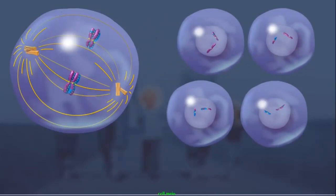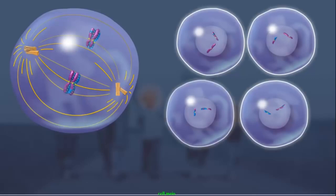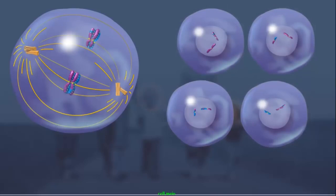This process, called independent assortment, produces four genetically distinct haploid gametes. As the total number of chromosomes increases in an organism, the number of genetically distinct gametes increases by 2 to the nth power.